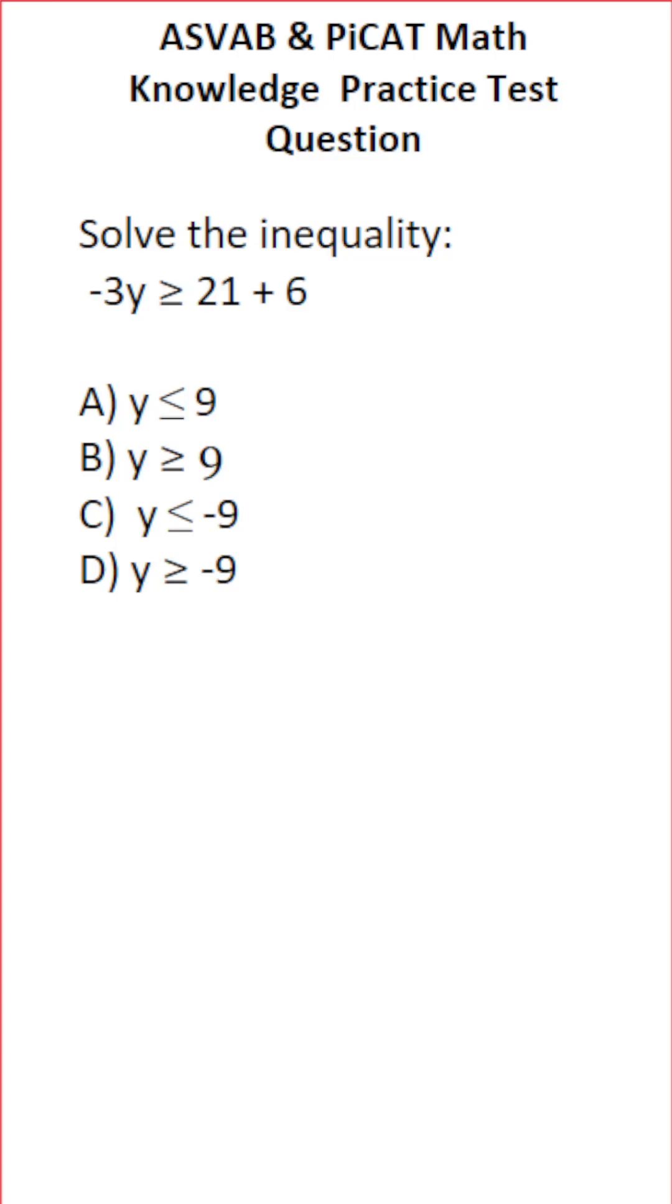This math knowledge practice test question for the ASVAB and PICAT says solve the inequality: negative 3y is greater than or equal to 21 plus 6.